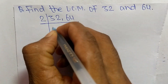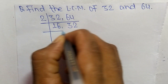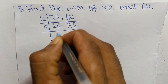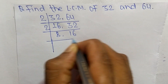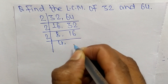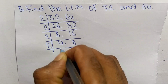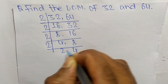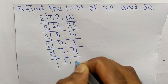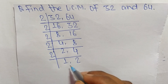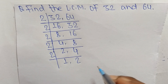That number is 2. So 2 times 16 is 32, and 2 times 32 is 64. Continuing: 2 times 8 is 16, 2 times 16 is 32, 2 times 4 is 8, 2 times 8 is 16, 2 times 2 is 4, 2 times 4 is 8, 2 times 1 is 2, and 2 times 2 is 4. Now at last we have 1 and 2, which are not exactly divisible by the same number.